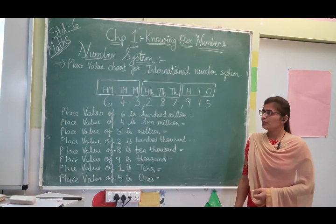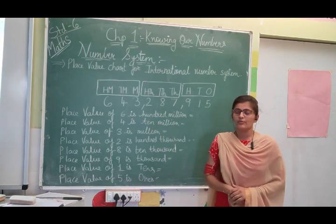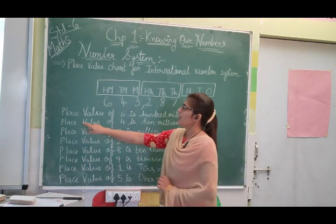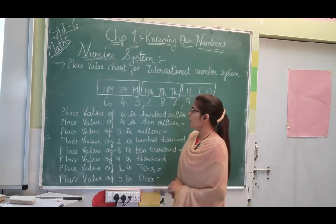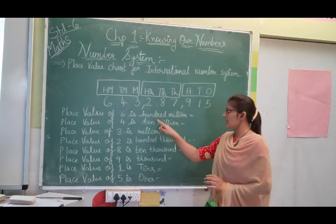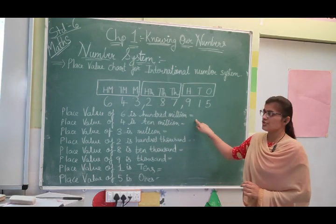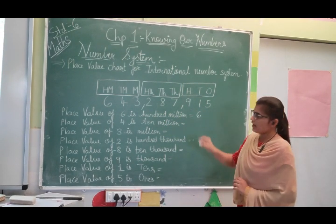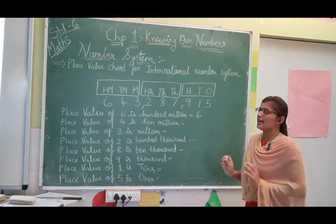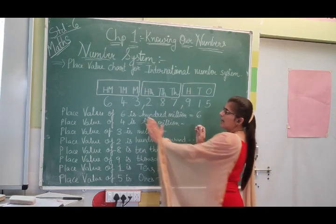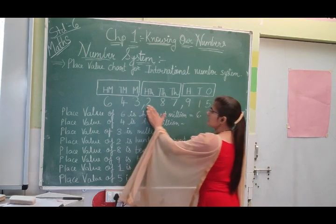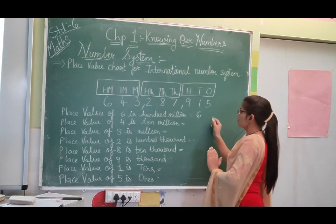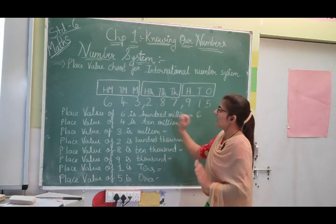Now, how to write the place value of each digit in the given number. The place value of 6 is 100 million. So we write 6 followed by 8 zeros, which gives 600,000,000 — that is 600 million.